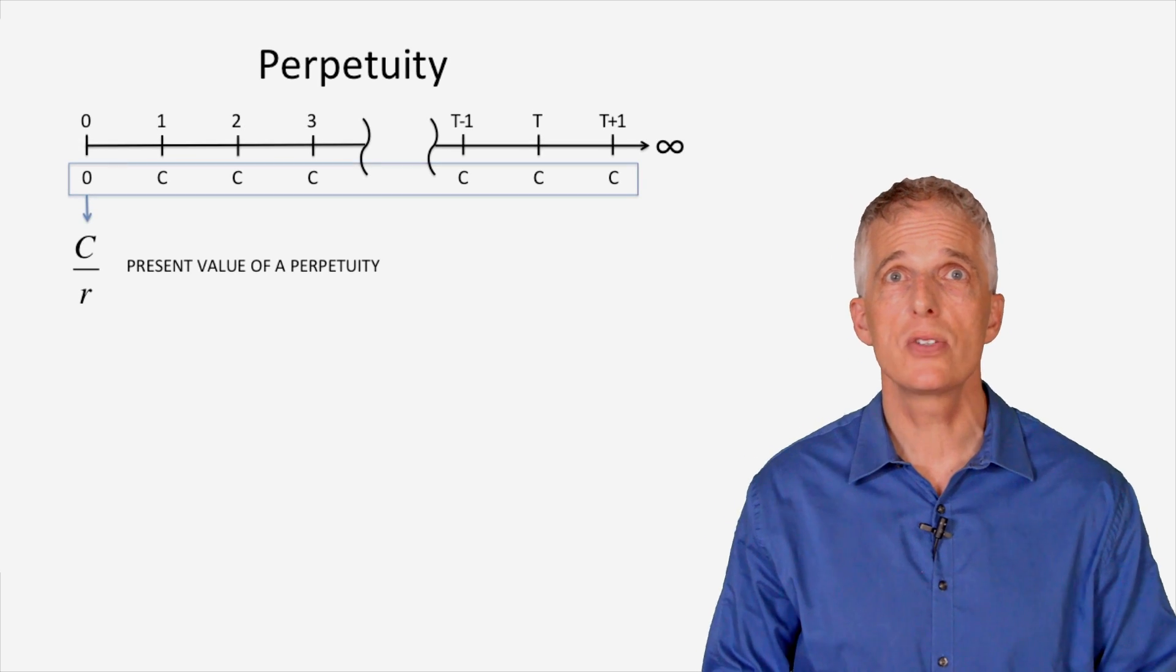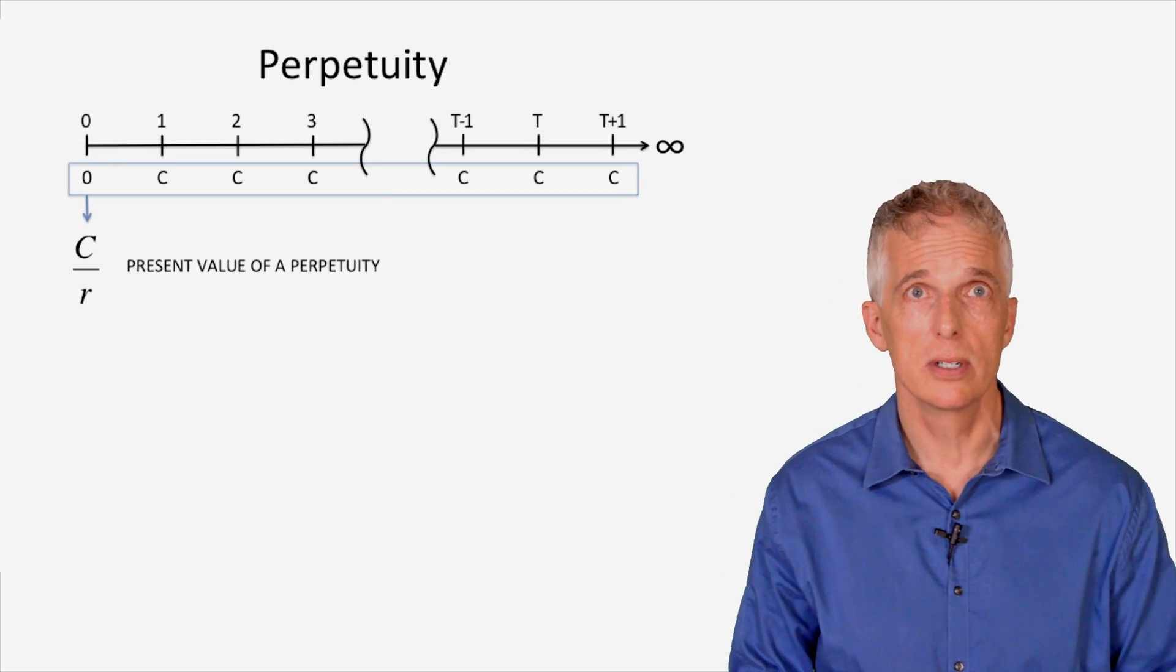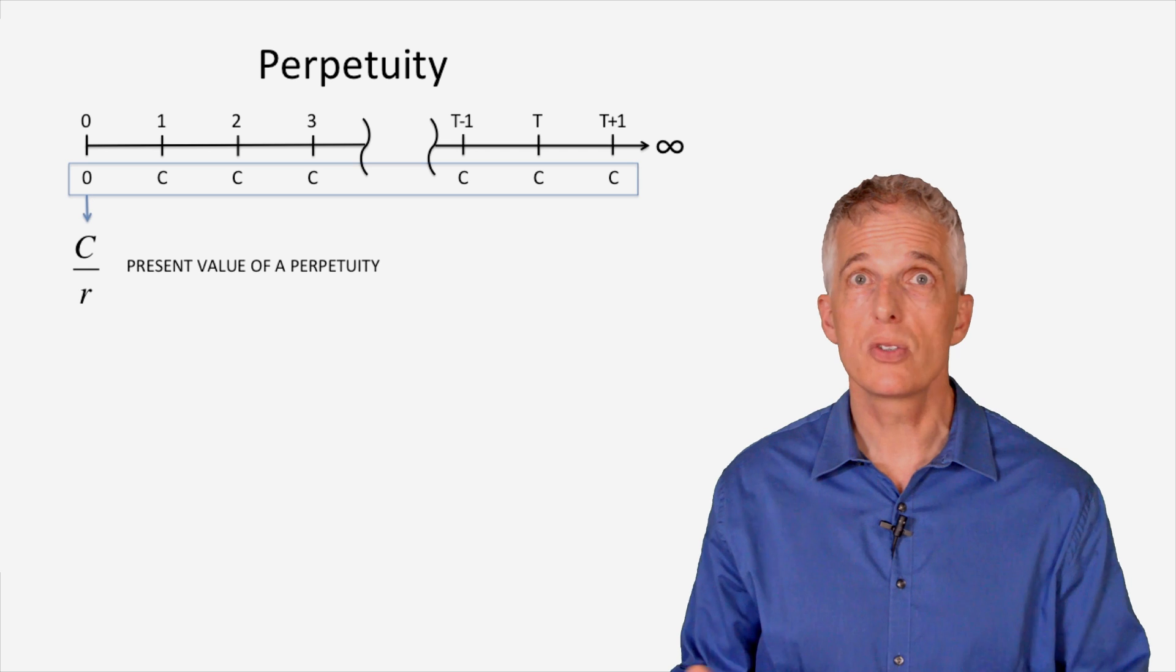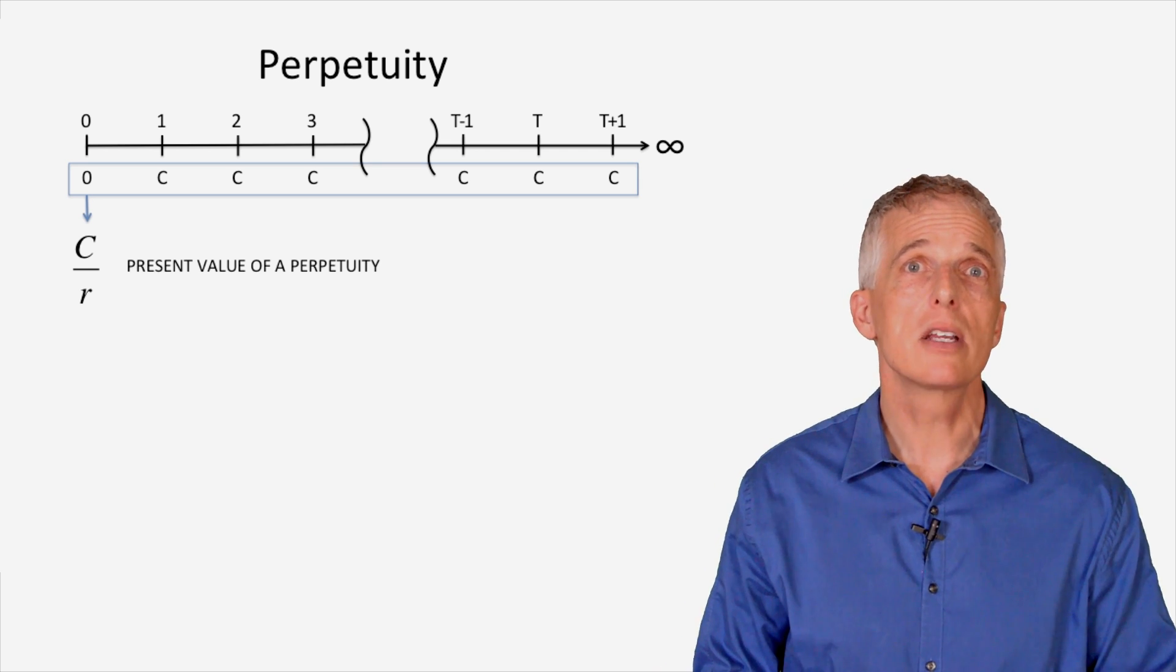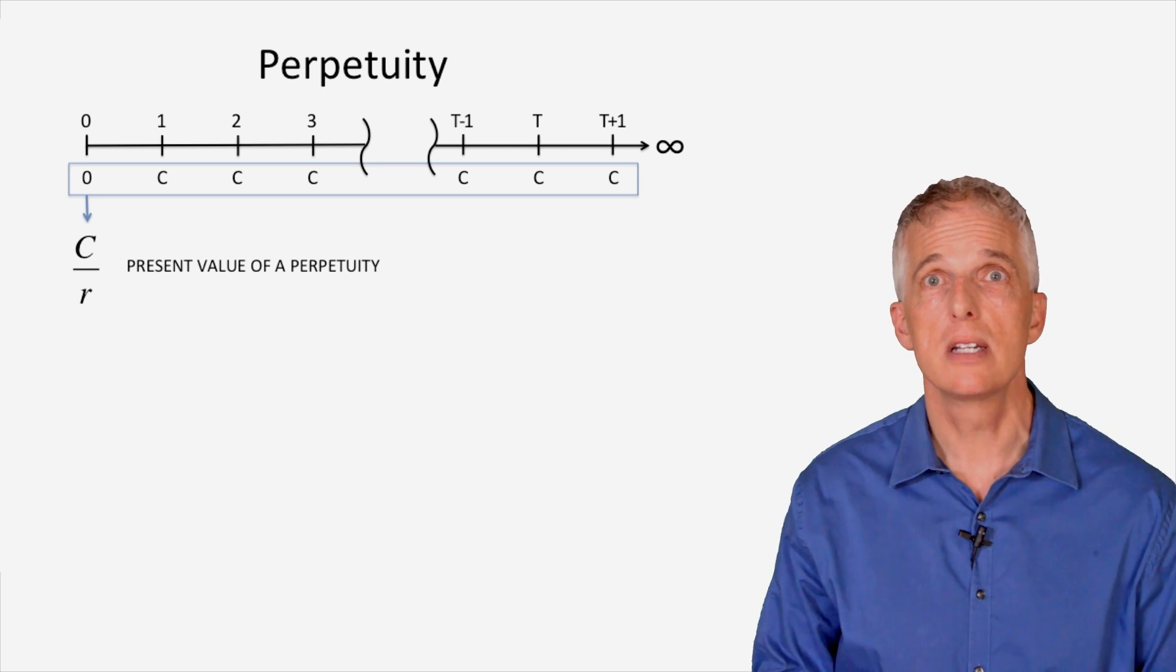A perpetuity is a cash flow C that will be received forever. If you can invest at an interest rate R, then the present value of these cash flows is merely C divided by R.